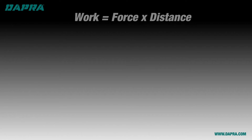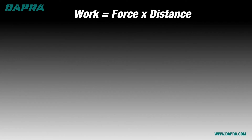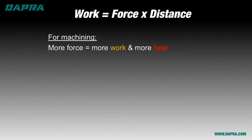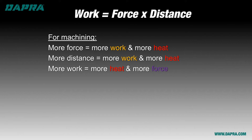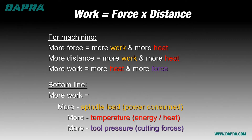We'll start with a basic piece of physics: the amount of work done equals force times distance. When machining, the more force created, the more work is done and the more heat or energy present, because whenever work is done, energy is transferred from one place to another. The more distance involved, the more work is done and the more heat transferred. As machinists, the bottom line is: the more work being done, the higher the spindle loads, the higher the temperature, and the more tool pressure involved. We can use these facts to predict where in the speed and feed ranges to operate.